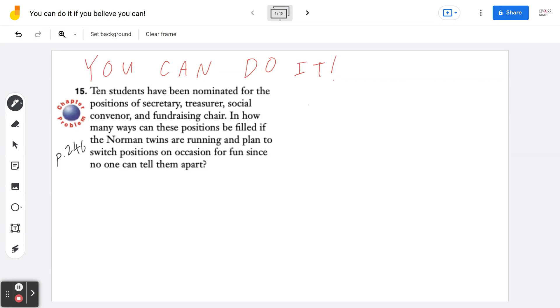10 students have been nominated for the positions of secretary, treasurer, social convener, and fundraising chair. In how many ways can these positions be filled if the Norman twins are running and plan to switch positions on occasion for fun since no one can tell them apart?